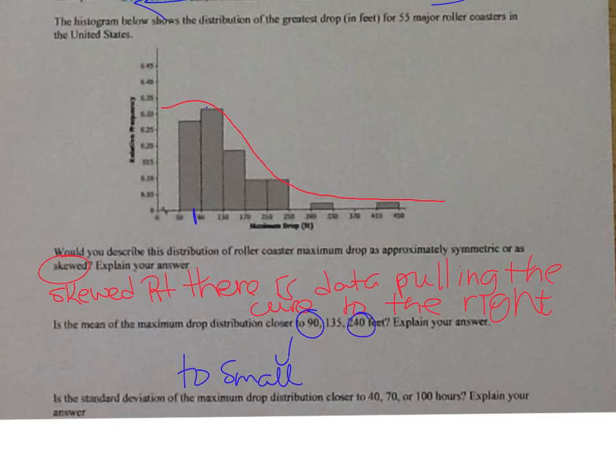Would it be 240, which would be right over in here? No, that would be too big. So it must be 135 would be the mean. The 135 would be about here, which kind of makes sense.